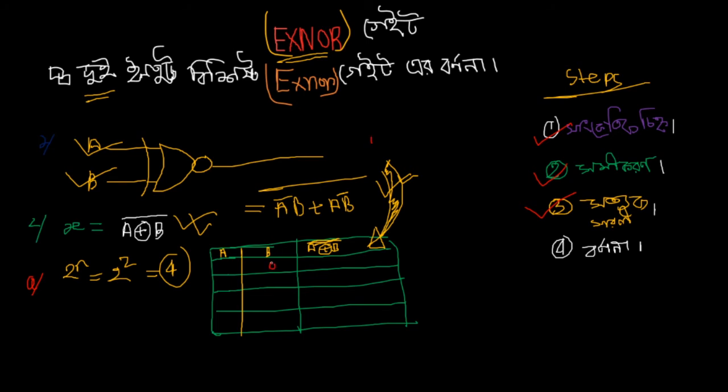Now for the input values. When both inputs A and B are 0, let me calculate. If A is 0 and B is 0, then A complement is 1 and B complement is 1.